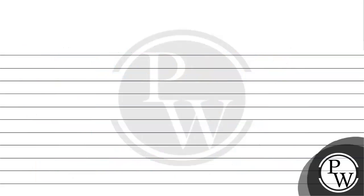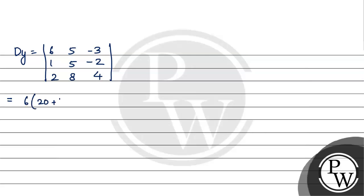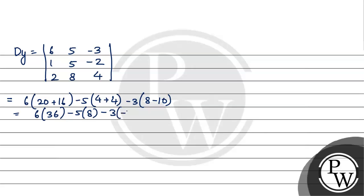Now Dy: replace the second column with D values, giving rows [6, 5, −3], [1, 5, −2], [2, 8, 4]. This equals 6 multiply by (20 plus 16), minus 5 multiply by (4 plus 4), minus 3 multiply by (8 minus 10). That gives 6×36 minus 5×8 minus 3×(−2), which equals Dy is equal to 182.